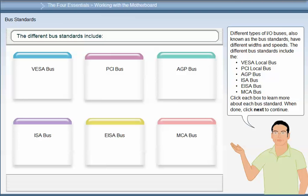Different types of IO buses, also known as bus standards, have different widths and speeds. The different bus standards include: the Video Electronics Standards Association (VESA) local bus, Peripheral Component Interconnect (PCI) local bus, Accelerated Graphics Port (AGP) bus, Industrial Standard Architecture (ISA) bus, Extended Industrial Standard Architecture (EISA) bus, and Micro Channel Architecture (MCA) bus.